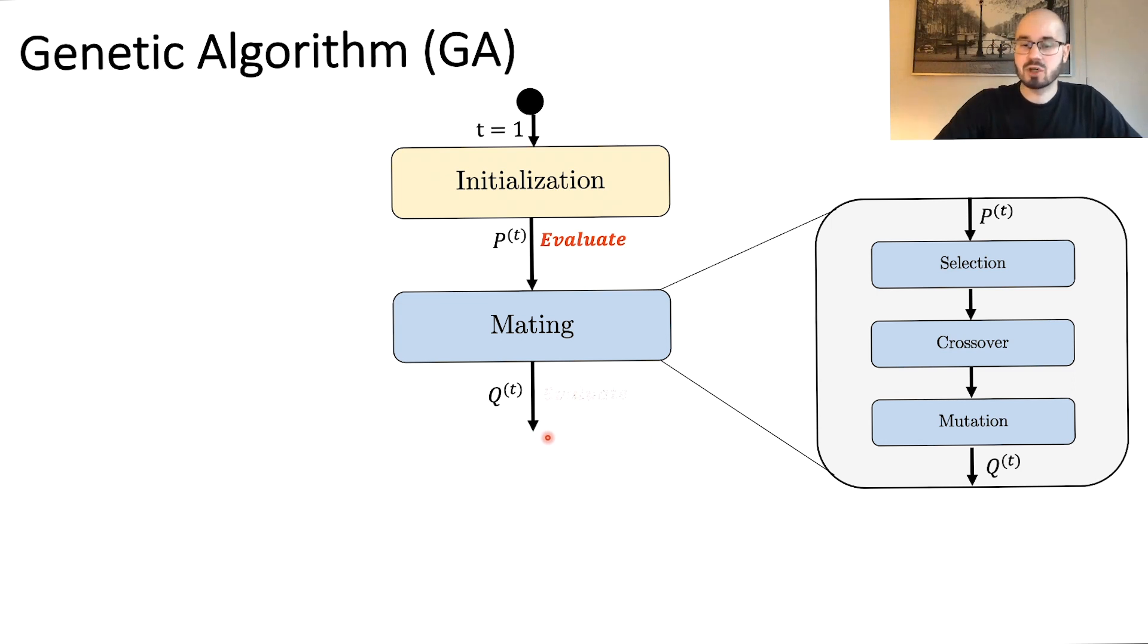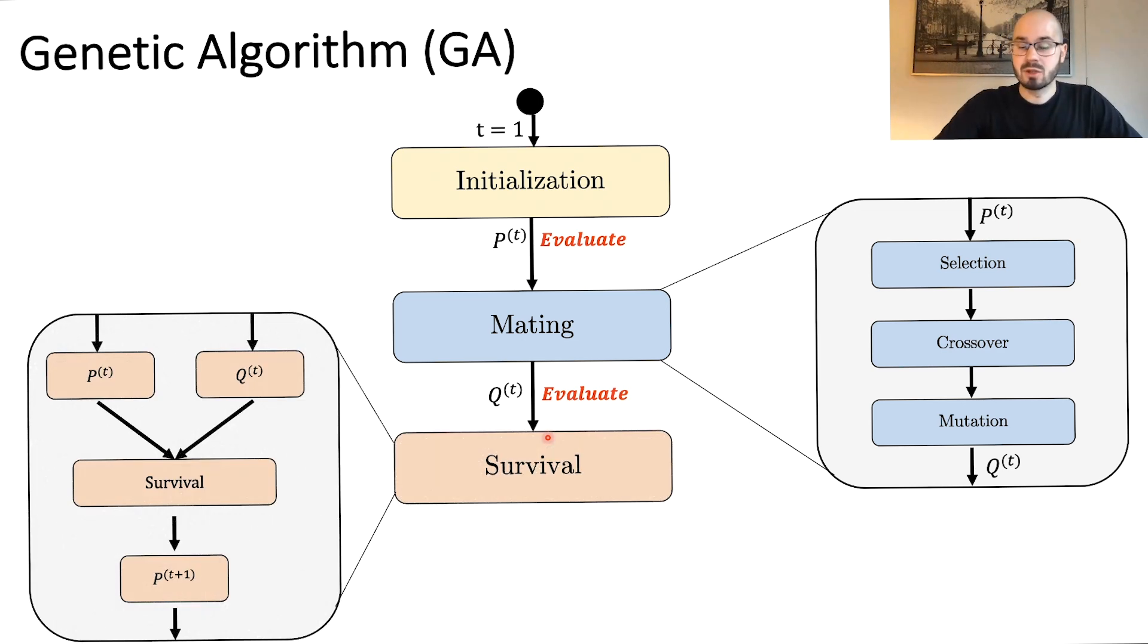q of t then is also evaluated using the f of x function. So at this point we have two populations: we have p of t and q of t. Now the survival, the third step of the algorithm, combines p of t and q of t together and decides which of these individuals are worth keeping and which of them can be discarded. So the output of the survival is a new population p of t plus one, which is a subset of the merged populations.